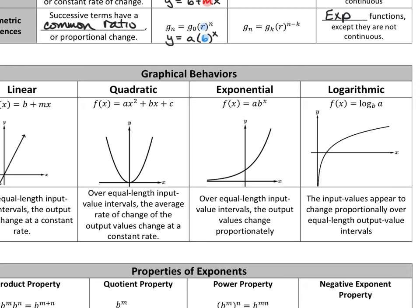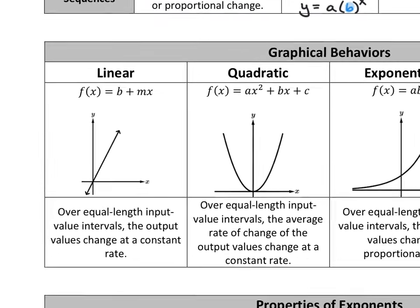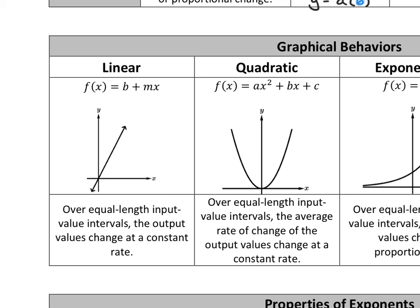For linear functions, if you see a table of values where the average rate of change or first differences is constant, you would write: over equal length input value intervals — evenly spaced x-values — the output values change at a constant rate. For quadratic functions where the second differences are the same, we say the average rate of change of the output values changes at a constant rate — not the function itself, but the rate of change changing at a constant rate.